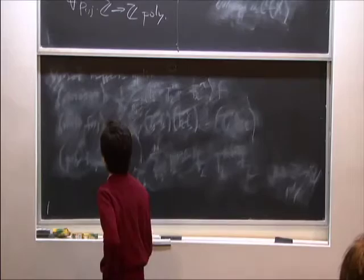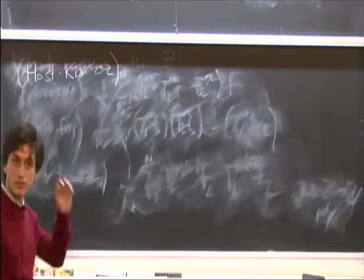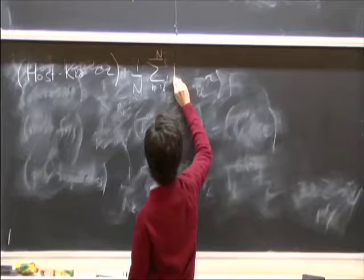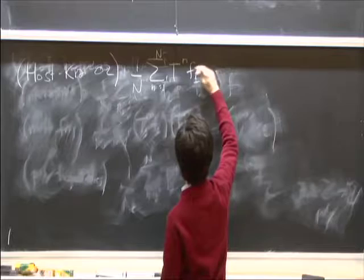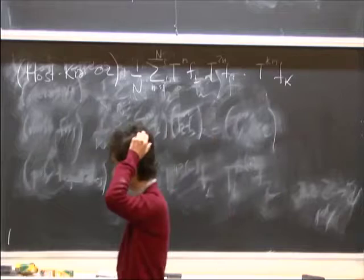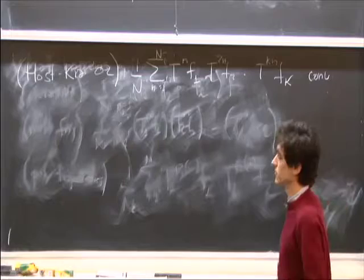That's the background. Let me mention just a few of the partial results. Probably the best known is the result of Furstenberg, which shows convergence in the case where you take one transformation and apply T^n to the first function, T^{2n} to the second function, and so on, T^{kn} to the k-th function. This average was proven to converge in L² by Host-Kra.